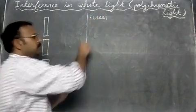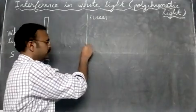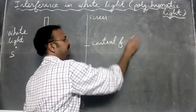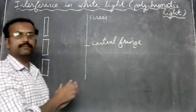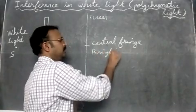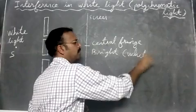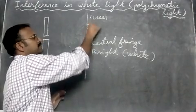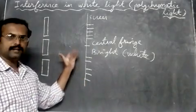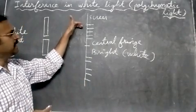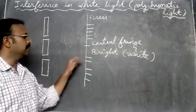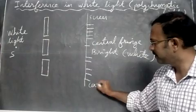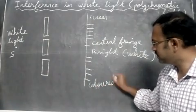On the screen, you get an interference pattern. In the center portion, we get a central fringe, which will always appear bright — in this case it appears white in color. Surrounding the central fringe, you get different colored fringes of different thicknesses, because white light contains seven colors that interfere to produce different colored bands.